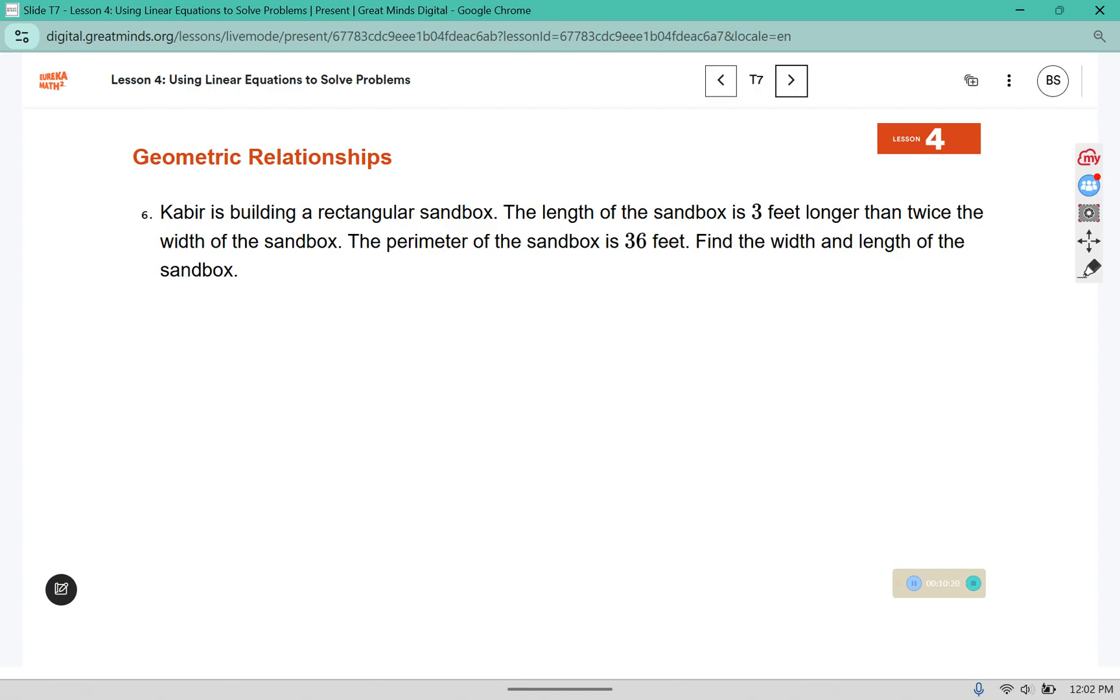Kabir is building a rectangular sandbox. Usually when I see a problem like this, I try and draw out a little sketch. The length of the sandbox is 3 feet longer than twice the width. So 3 longer than twice the width. So the width, we can use a W there instead of an X. And then it says the perimeter of the sandbox is 36 feet. Well perimeter goes all the way around the outside. The nice thing about the rectangle is the sides are the same on both of those. So we have the perimeter, we have 2W plus 3 plus W plus 2W plus 3 plus another W, again all the way around, equals 36.